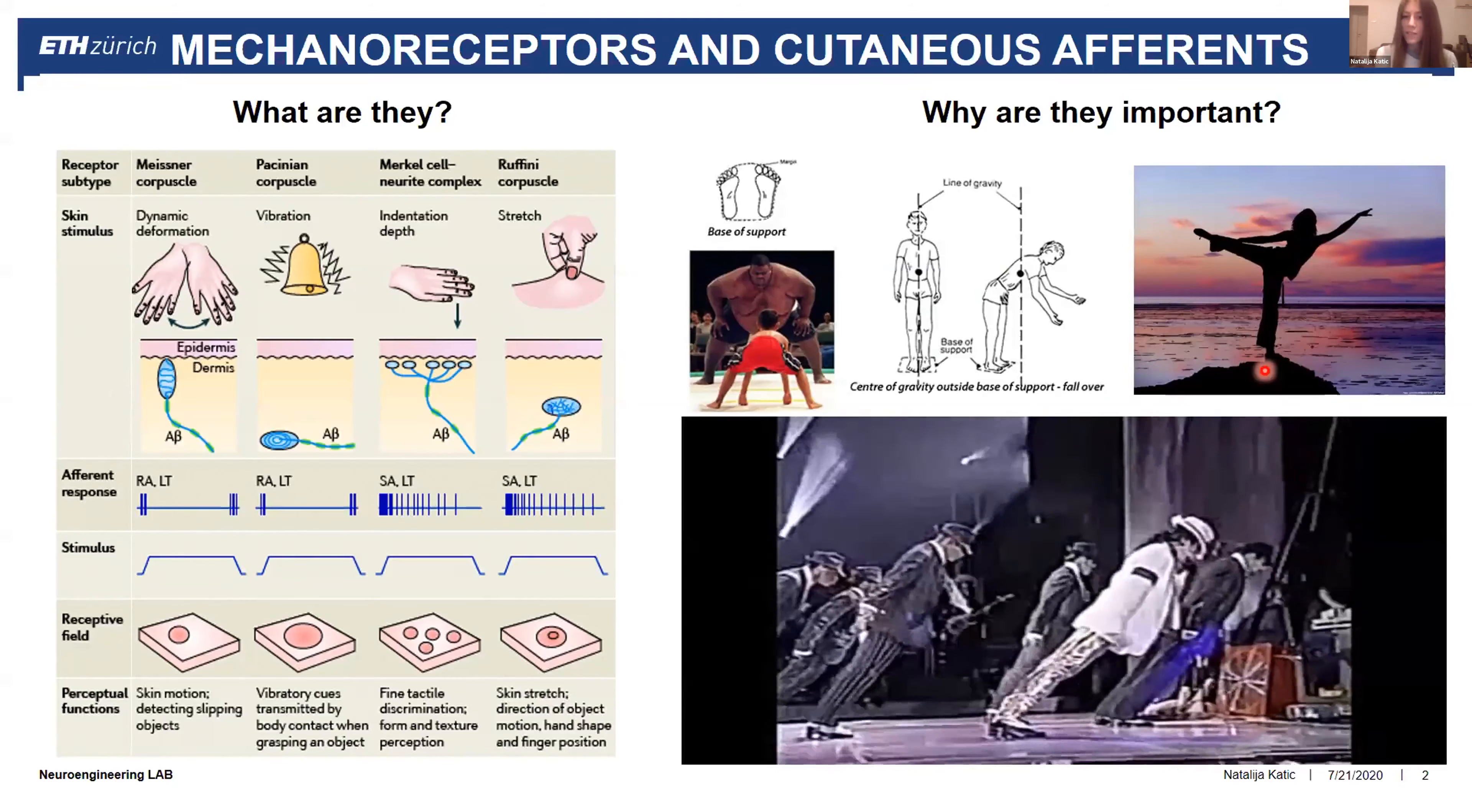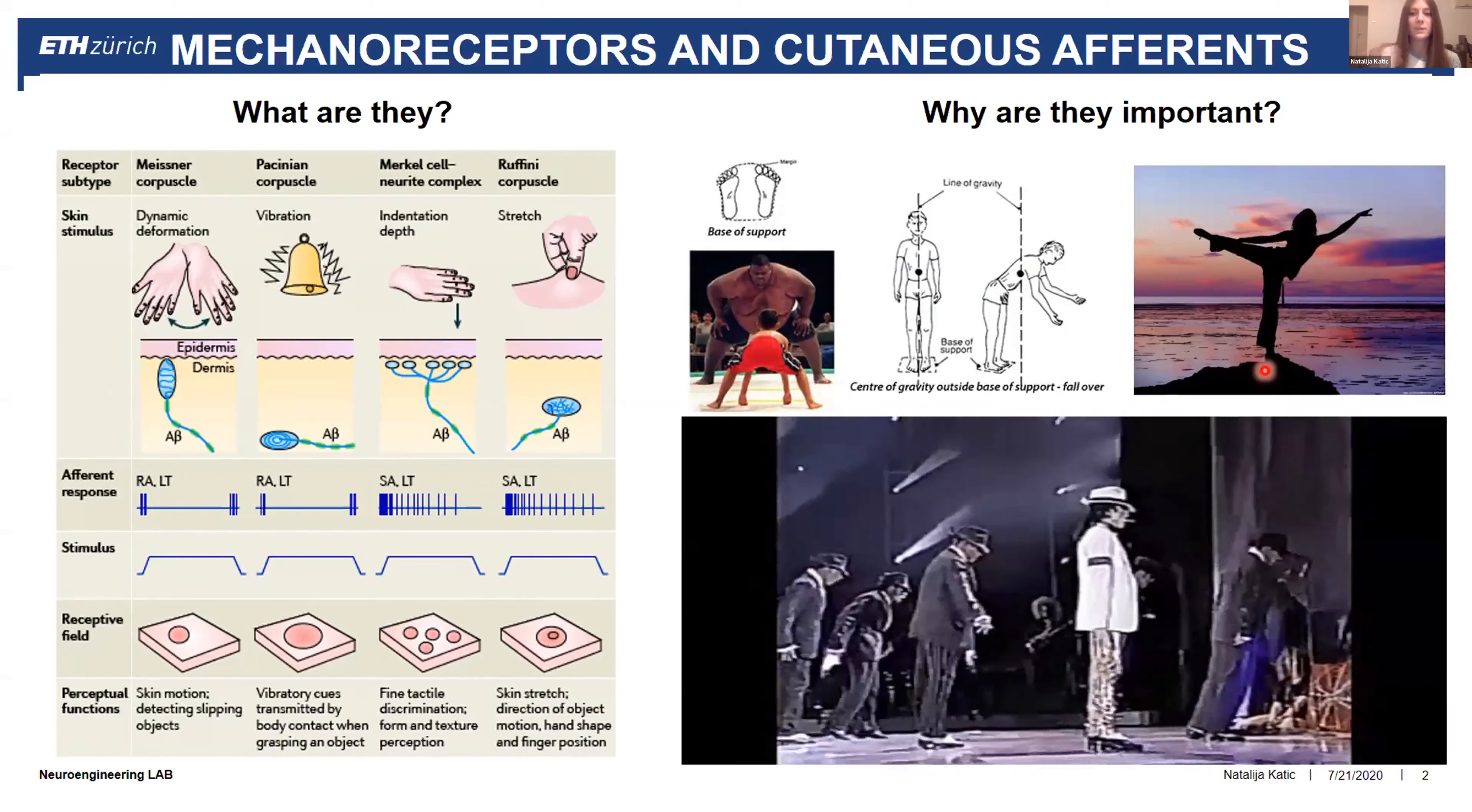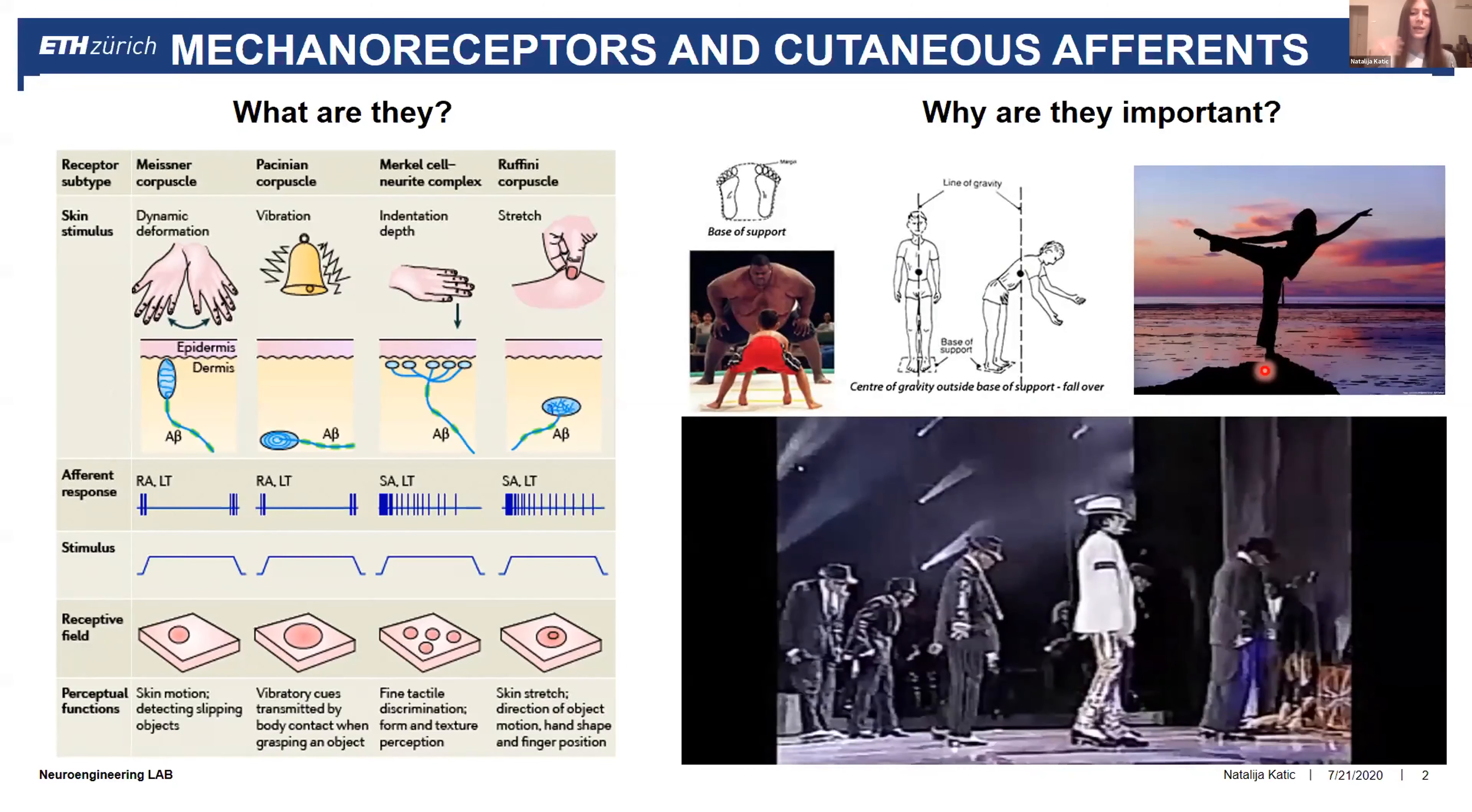For example, Michael Jackson wouldn't be able to do his special move without his special shoes because mechanoreceptors will react in this situation, saying that the person's center of mass is outside the base of support, so he needs to step up in order to prevent the fall.